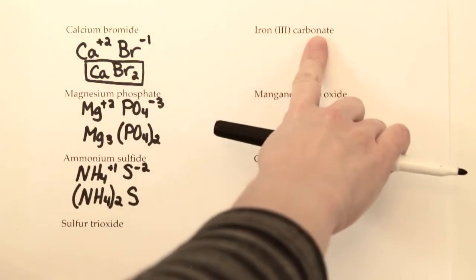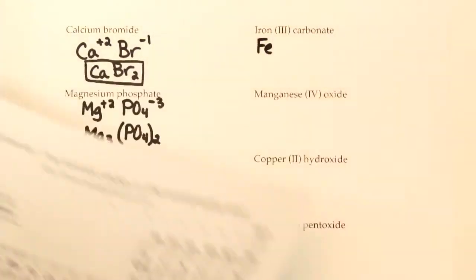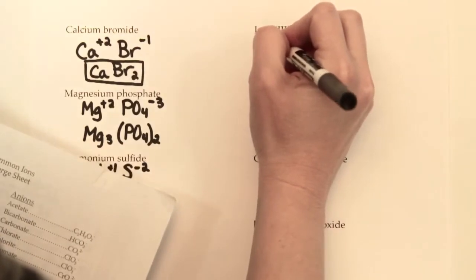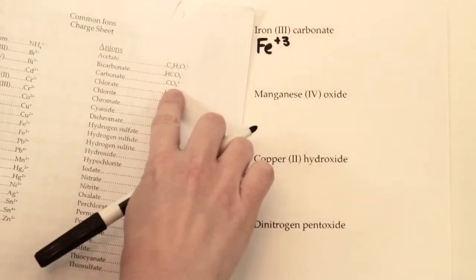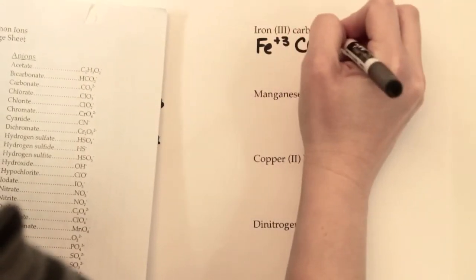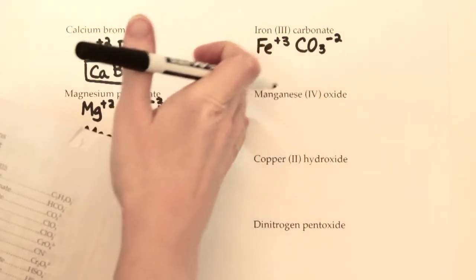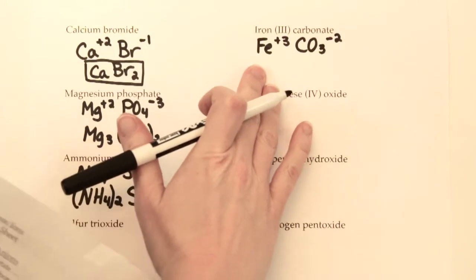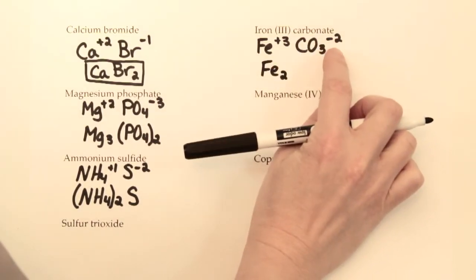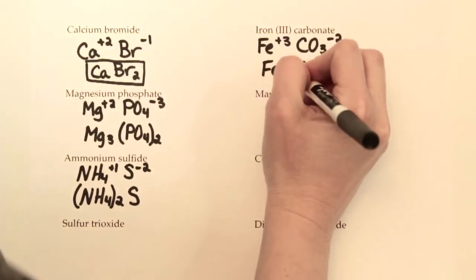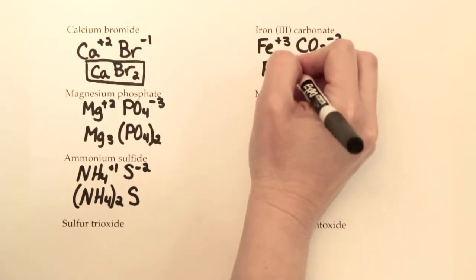For iron(III) carbonate: iron's symbol is Fe, and the Roman numeral III tells you it's the +3 form. Carbonate ends in -ate, so look it up — carbonate is CO₃ with a −2 charge. The LCM of 3 and 2 is 6, so we need 2 irons for +6 and 3 carbonates for −6. To avoid implying 1 carbon and 33 oxygens, put carbonate in parentheses: Fe₂(CO₃)₃.